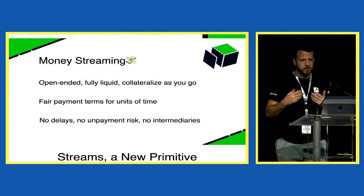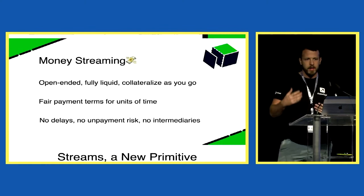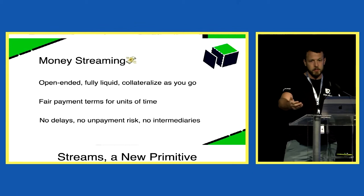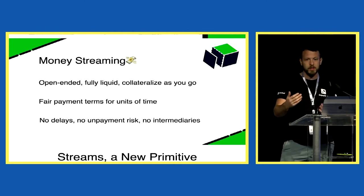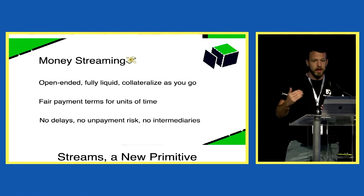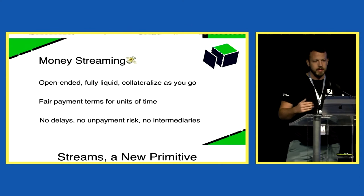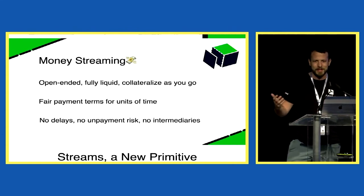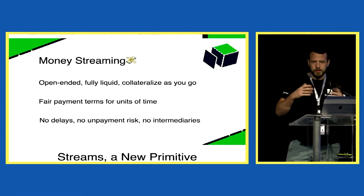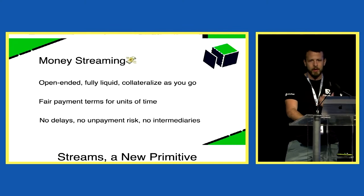Streams are the most fair way of paying for time. If I'm buying your time and I pay you at the end of the month, you're working for free with a promise. If I pay you at the beginning, I'm paying with the promise you'll work for a month. With money streams that disappears — I pay you for every unit of time you provide. You get paid every second, there are no delays, the blockchain is never late, and we do it with no intermediaries.